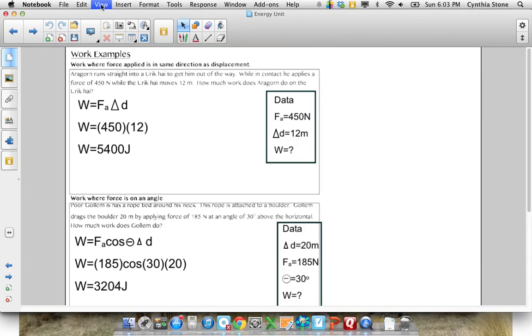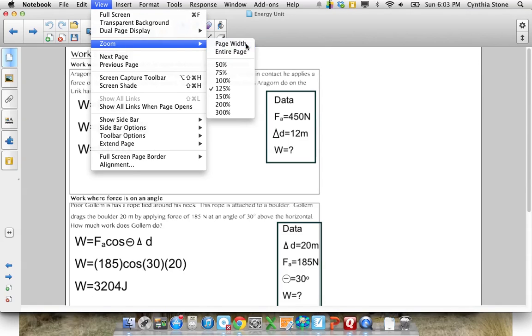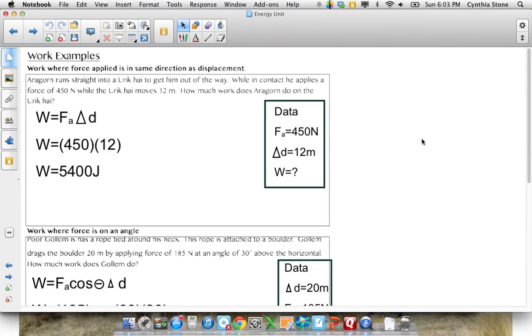Here's our first example. I'm going to change the view so we can see it a bit better. So the first example is work where force applied is in the same direction as the unit. So the things that we should see in the question, he runs straight to Uruk-hai to get him out of the way, while in contact he applies a force of 450 newtons moving 12 meters. How much work does he do? Notice there's no mention of an angle.